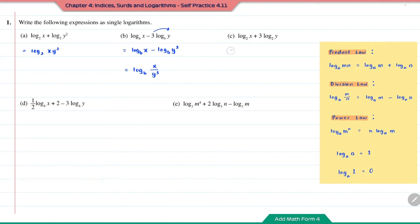Question C: both logs are in the same base. First, move the 3 to the front using the power law — it becomes log base 2 of x plus log base 2 of y to the power of 3. Now referring to the product law, combine them as log base 2 of x times y to the power of 3.